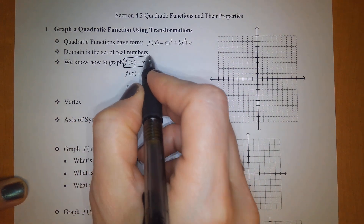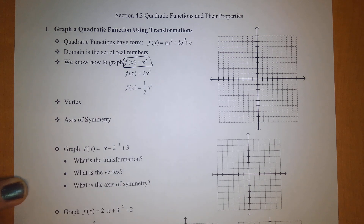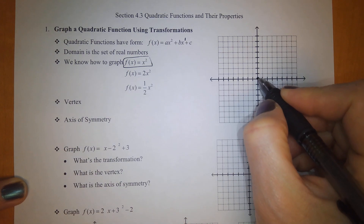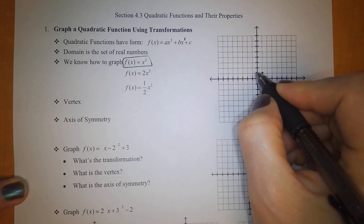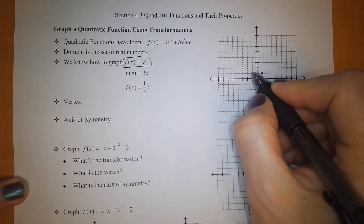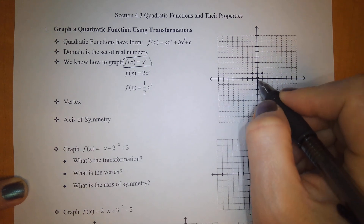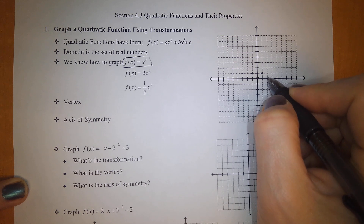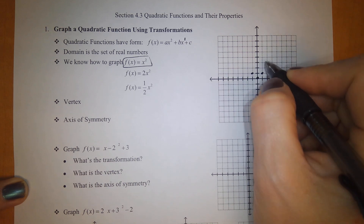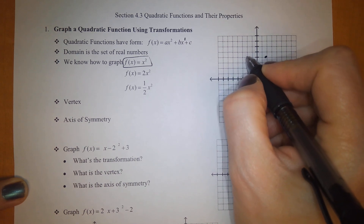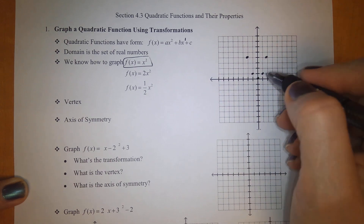The original x squared function is a graph that starts at the origin — this is where the vertex will be. It has points at (1, 1) symmetric over the y-axis, and another point at (2, 4) symmetric over the y-axis.